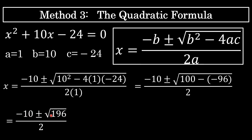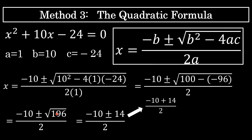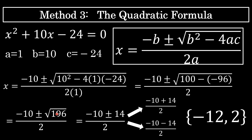So we have negative 10 plus the square root of 196 over 2, and negative 10 minus the square root of 196 over 2. The square root of 196 is exactly 14, so our two solutions are negative 10 plus 14 over 2, and negative 10 minus 14 over 2. The results are negative 12 and 2, as we knew they would be from the factoring and completing the square methods. In the description for this video, you can find more resources for solving quadratic equations. Thanks for watching — I hope you learned something.